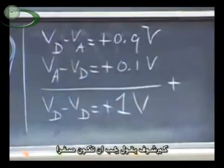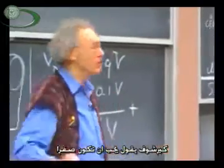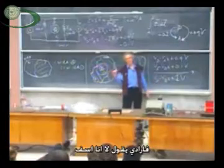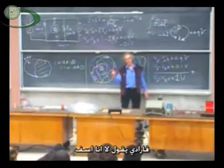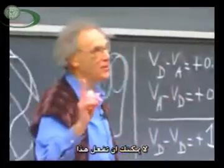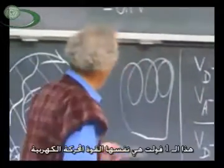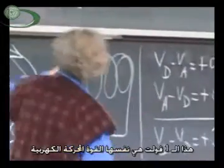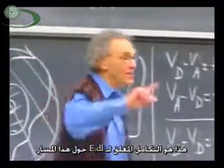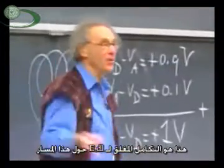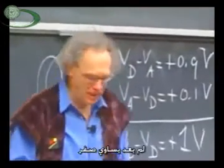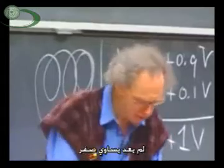Kirchhoff said it has to be zero, because I'm back at the same potential where I was before. Faraday says, uh-uh, I'm sorry. You can't do that. That 1 volt is exactly the EMF of 1 volt — that is the closed loop integral of E dot dL around that loop. It's no longer zero.